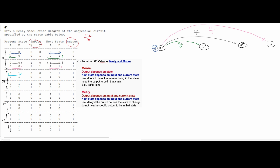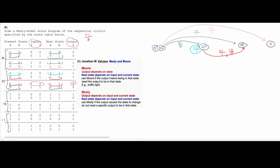Next, we have 01 going to 01 — another case where it's going to itself — with inputs 00 over output 1. Then 01 going to 10, with inputs 01 and output 1. We also have 01 going to 10 again, so we'll separate them with a comma: inputs 10 over output 0. Finally, 01 going to 00, with inputs 11 and output 0.